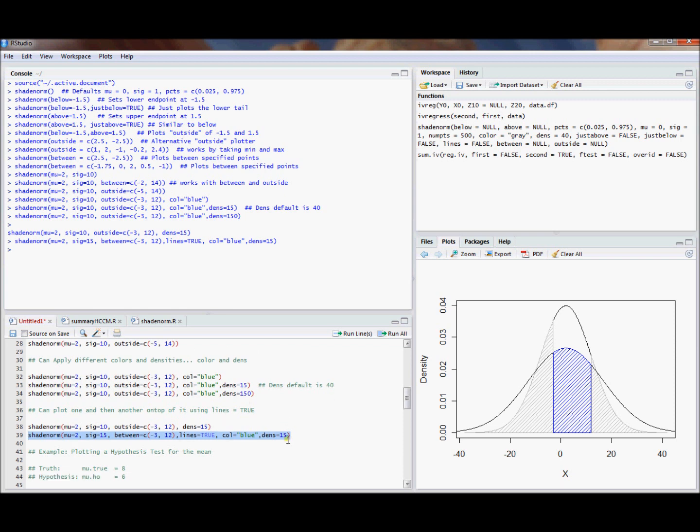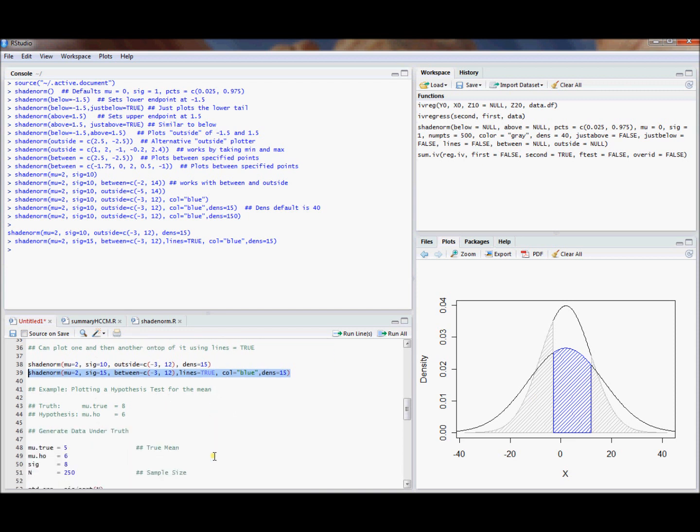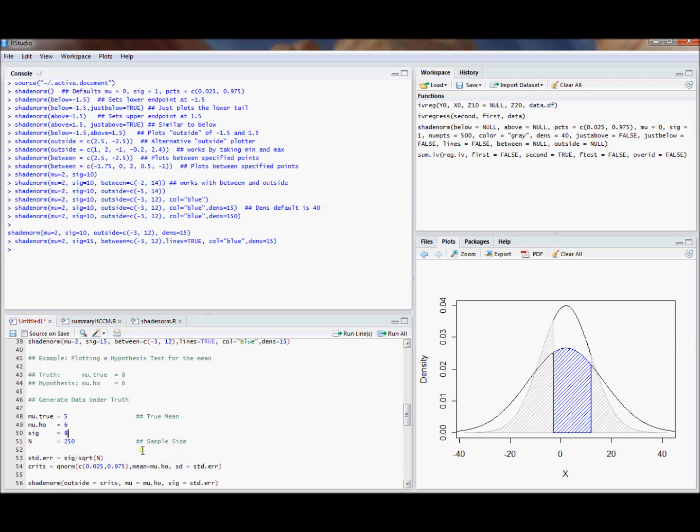I wanted to show an example of where you might actually use something like this. Suppose that we're doing some kind of hypothesis test. We think that the true mean might actually be 5, but the null hypothesis is a mean of 6. Let's say the standard deviation of the population is 8. There are 250 observations. Using that information we can compute the standard error of the mean to be the standard deviation over the square root of the sample size.